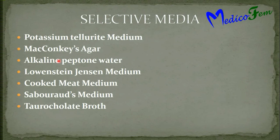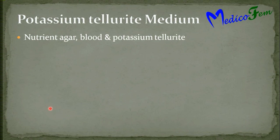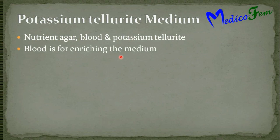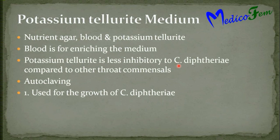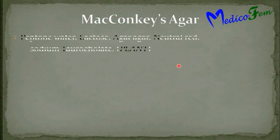Selective media include: potassium tellurite, MacConkey agar, alkaline peptone water, Lowenstein-Jensen medium, cooked meat medium, Sabouraud's medium, and thioglycollate medium. Potassium tellurite medium is a combination of nutrient agar plus blood plus potassium tellurite. Blood is the enriching agent; potassium tellurite acts as the selective agent, being less inhibitory to Corynebacterium diphtheriae compared to other common throat organisms. It is sterilized by autoclaving and used for growth of Corynebacterium diphtheriae.